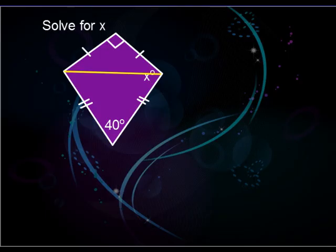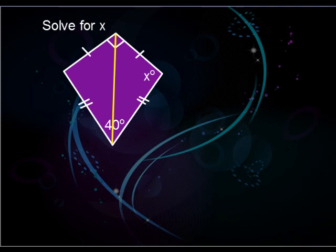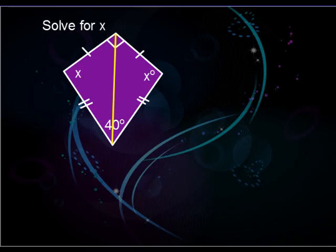Let's do an example and solve for x. If you draw one diagonal, does it cut the kite into two congruent triangles? We can already tell that's not the case because this angle of 90 degrees does not equal this angle of 40 degrees. However, drawing the diagonal the other way shows side-side-side, so we have two congruent triangles, meaning angle x equals that corresponding angle.